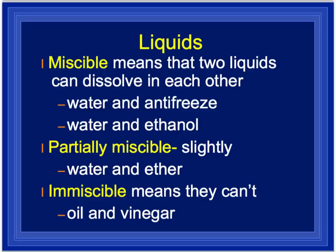A couple of quick terms: miscible means two liquids can dissolve in each other — water and antifreeze, or water and ethanol. Partially miscible means they sort of mix, like water and ether, where you can see some layers. And immiscible — like oil and vinegar salad dressing — means the two liquids clearly form separate layers.